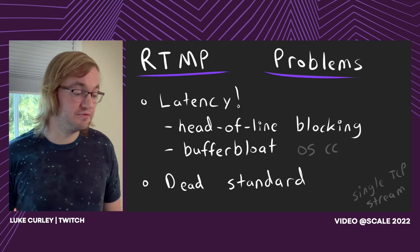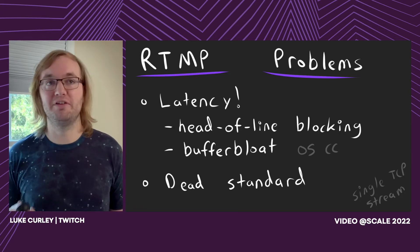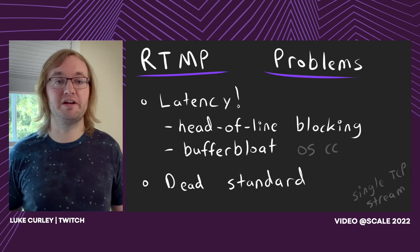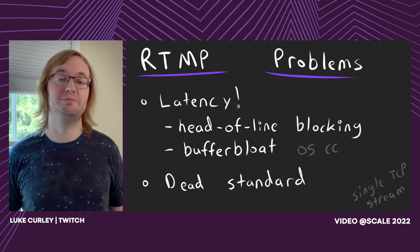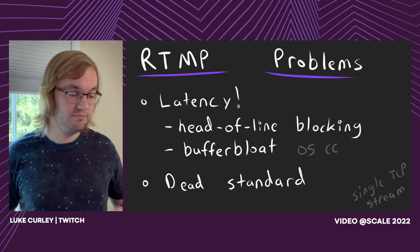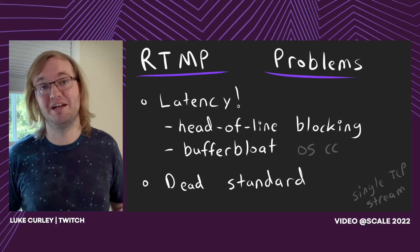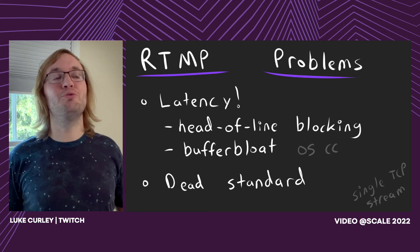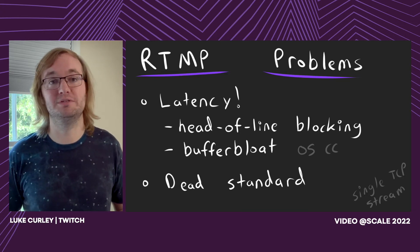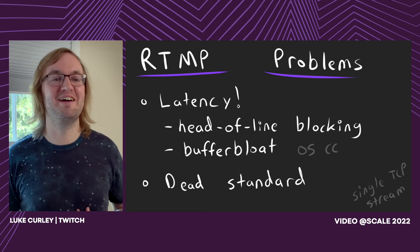RTMP, which we use for ingest, has the exact same problem with latency - it has head-of-line blocking and everything's over a single TCP stream. Even worse, the congestion control is defined by the operating system, so something like Reno or Cubic is just going to cause buffers and queues to build up. The other interesting thing with RTMP is that it's a dead standard - RIP Flash. There are improvements we'd like to make but it's hard when nobody really owns the standard. Even just adding new codec support like AV1 or VP9 is difficult.